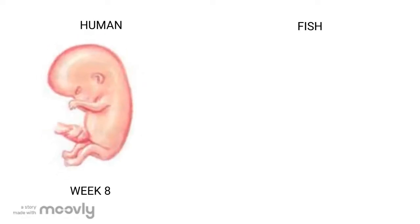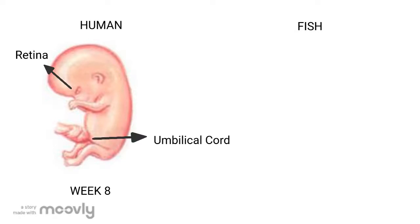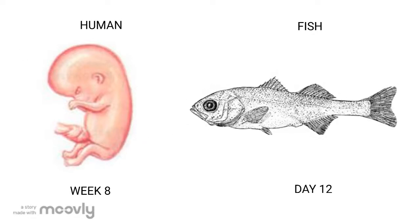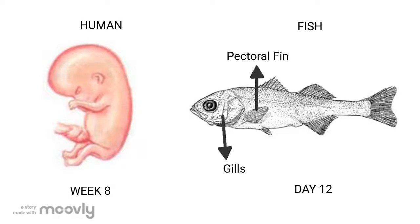Week 8 is the final week this is classified as an embryo. Upper limbs bend at the elbows, the genitalia begin to differentiate, and fingers become more distinct. On the 12th day of the fish embryo, they become more recognizable as the fish species. The pectoral fin continues to develop and the internal organs become more complex.